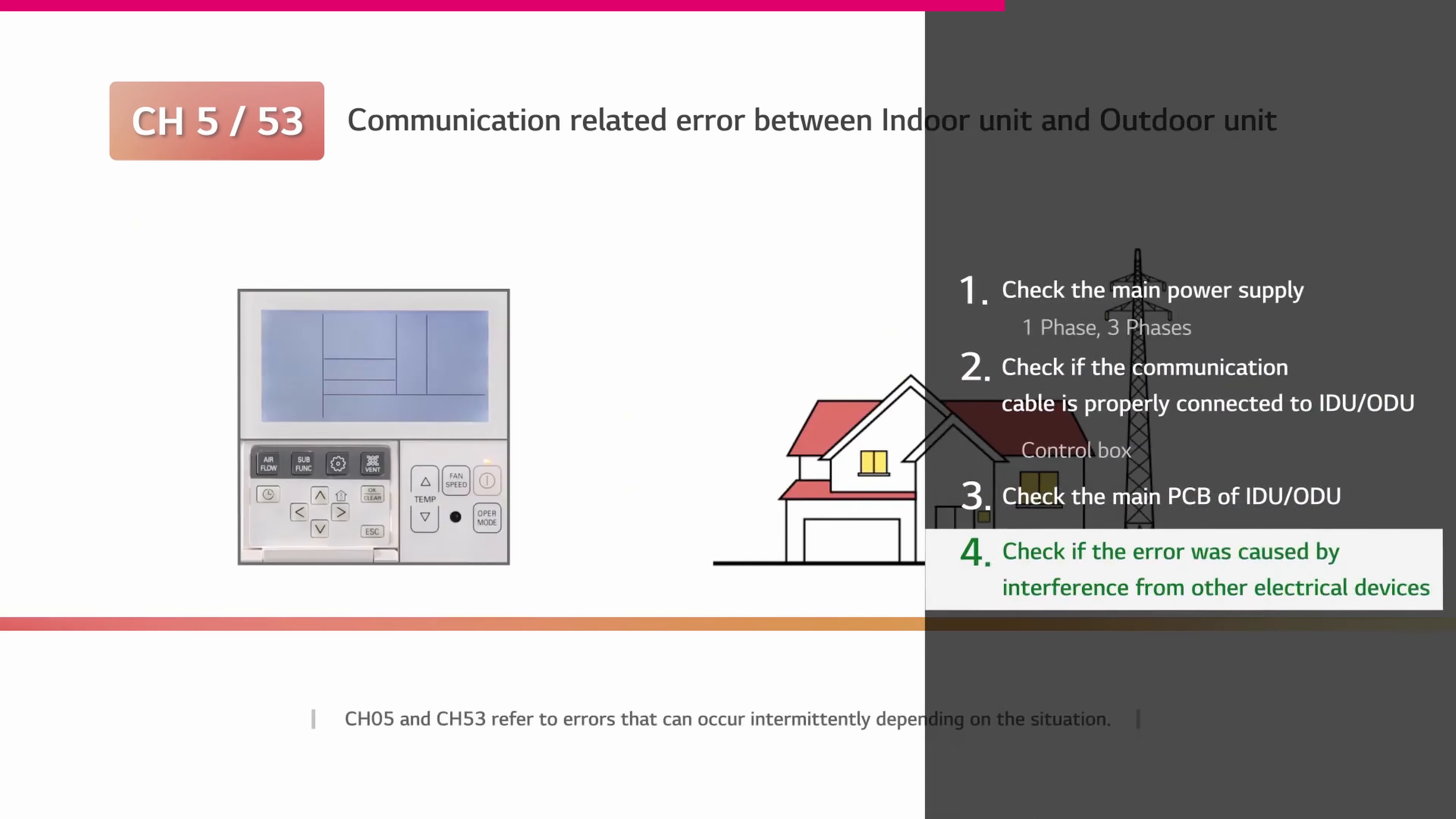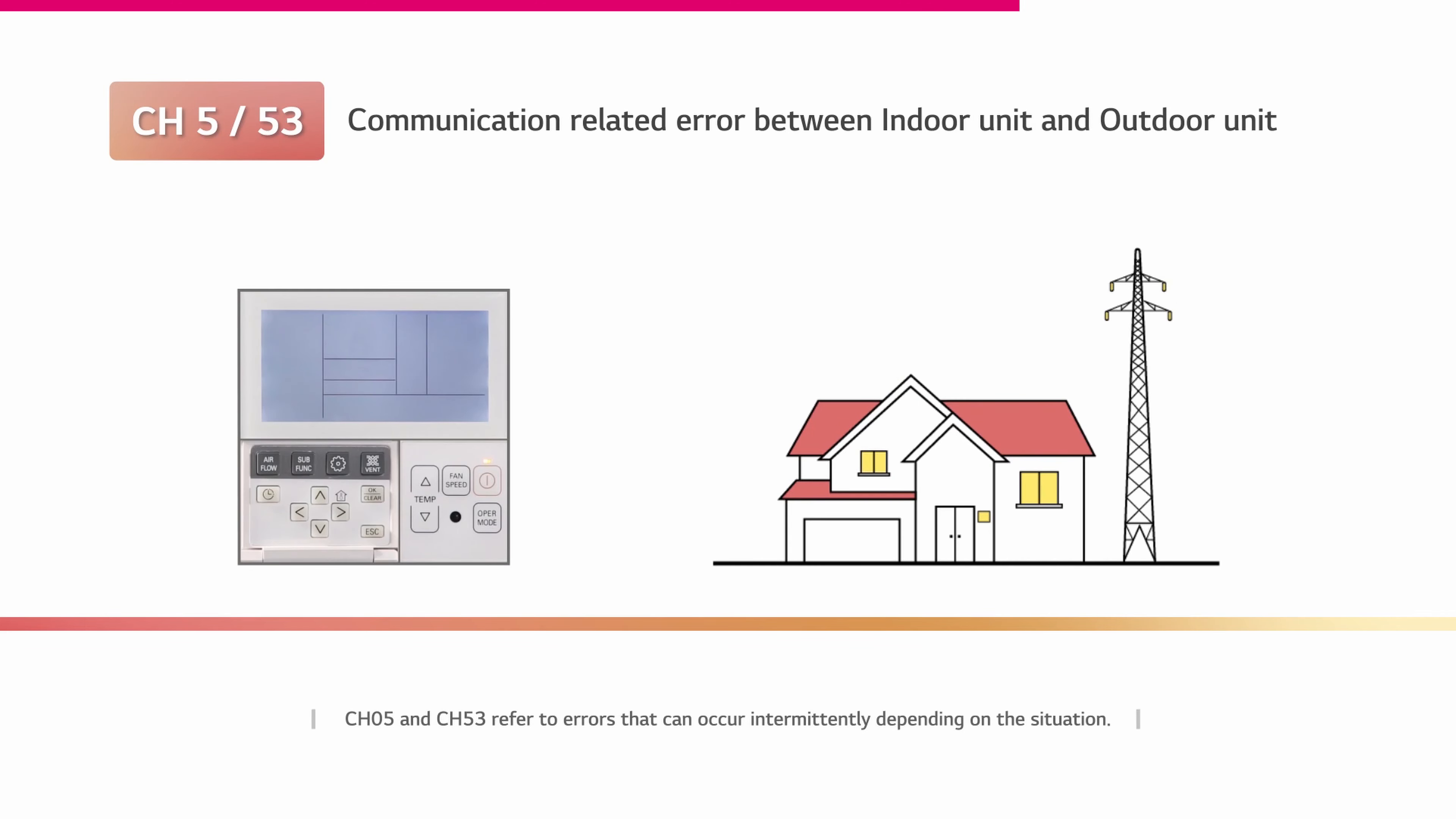Channel 5 and Channel 53 refer to errors that can occur intermittently depending on the situation. In this case, the error might stem from a surrounding load. Check if the error was caused by interference from other electrical installations. Also see if the same communication error occurs when only the product is operated after turning off other electrical, communication and security devices and lighting.